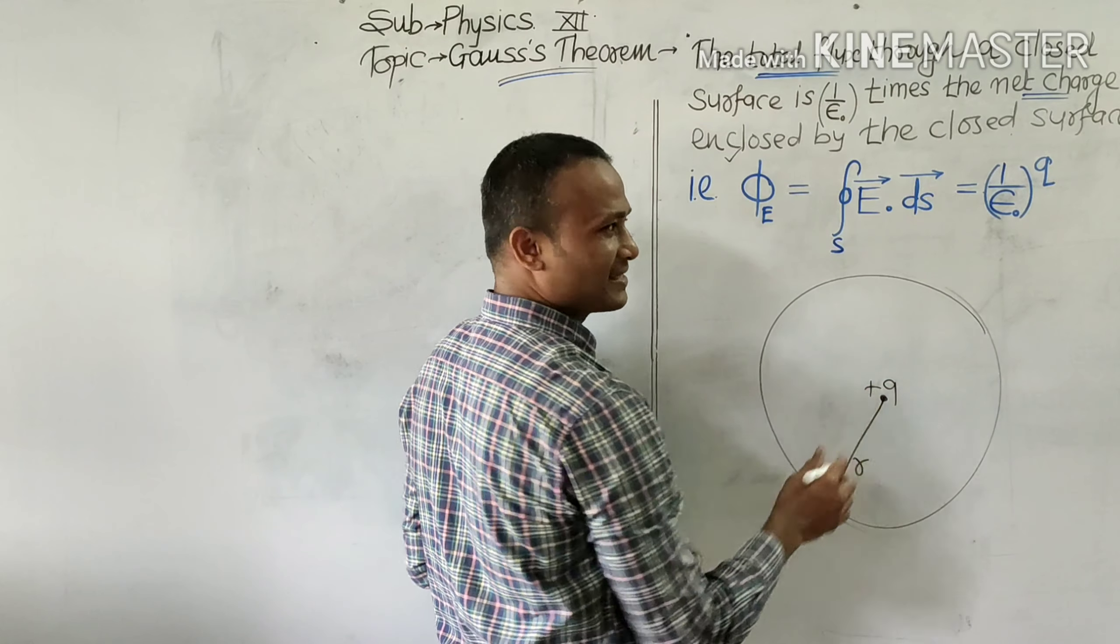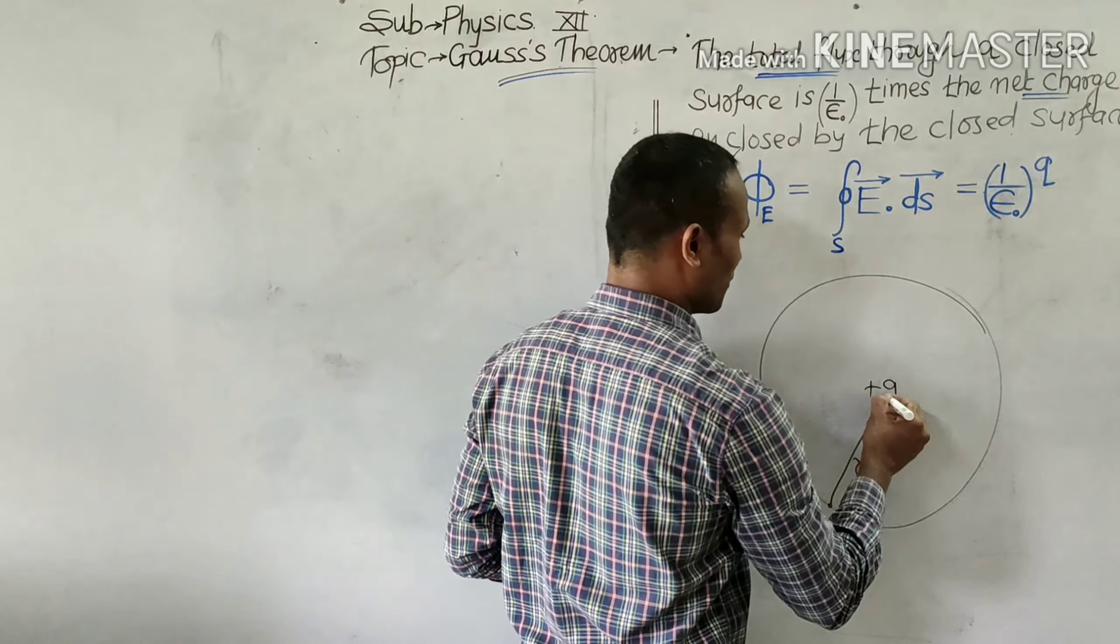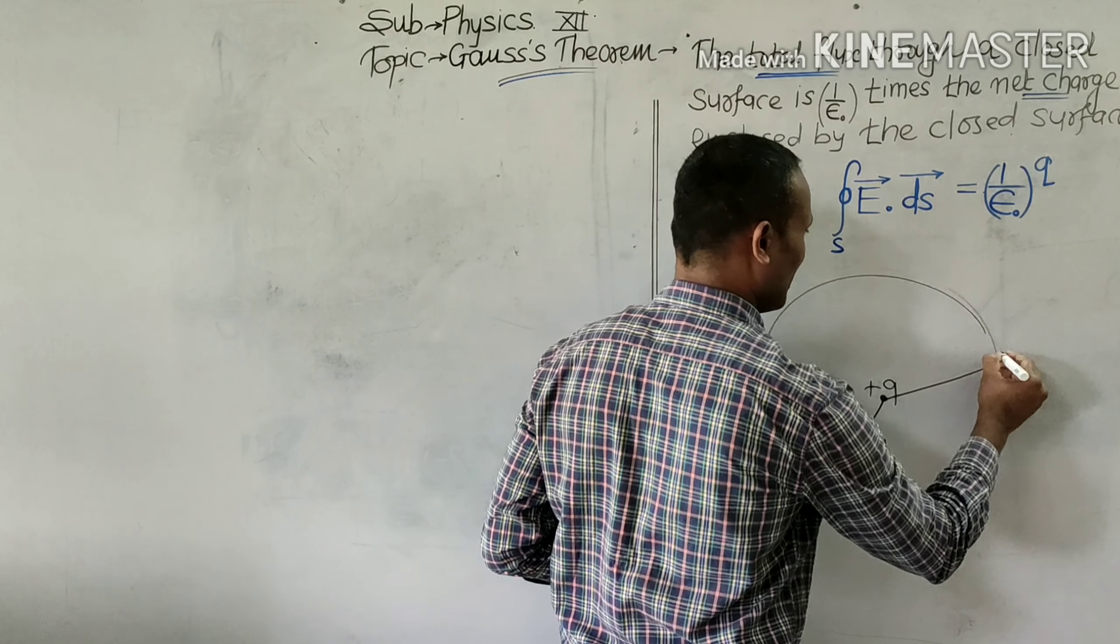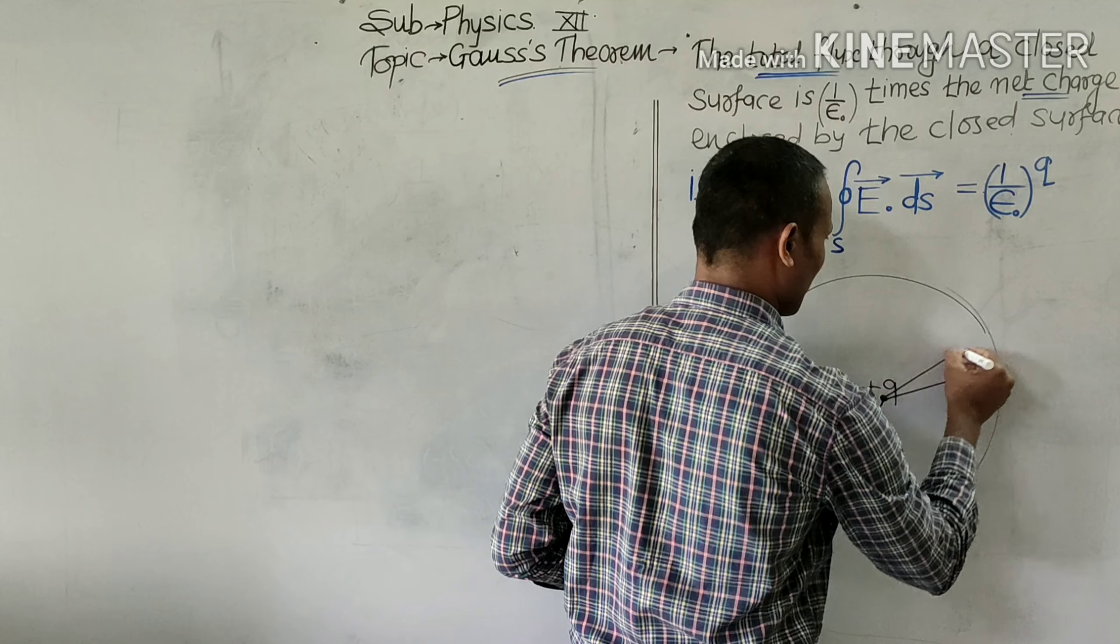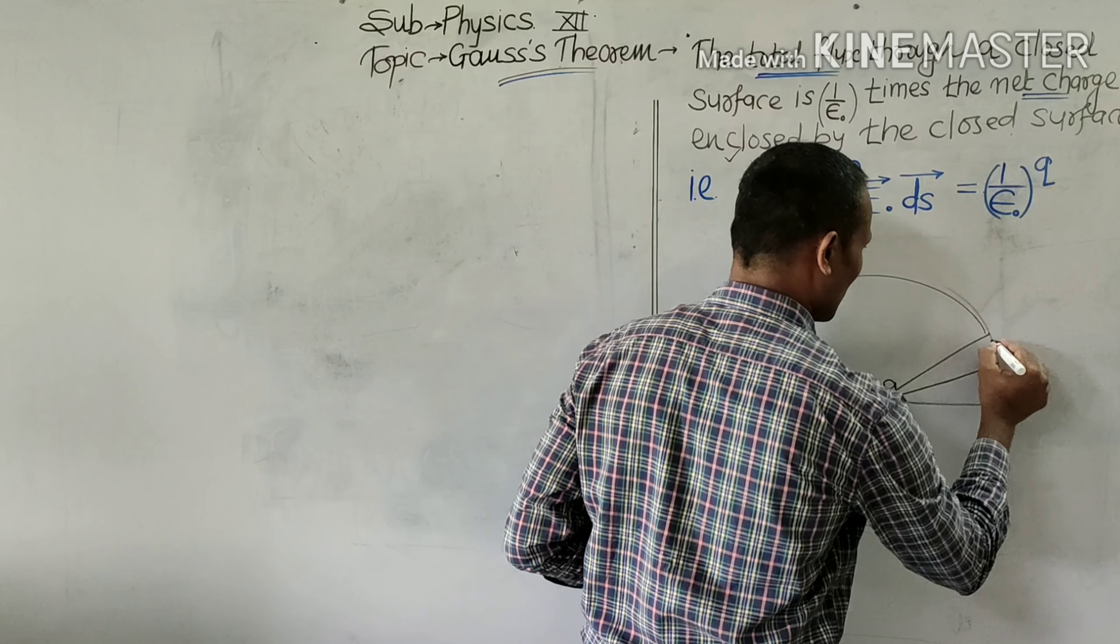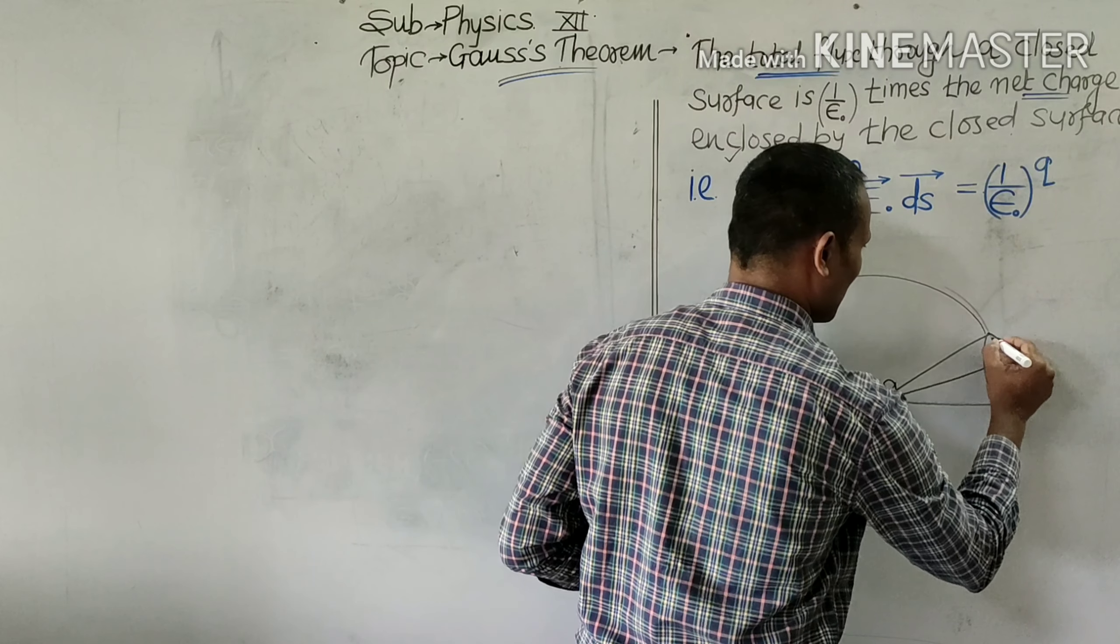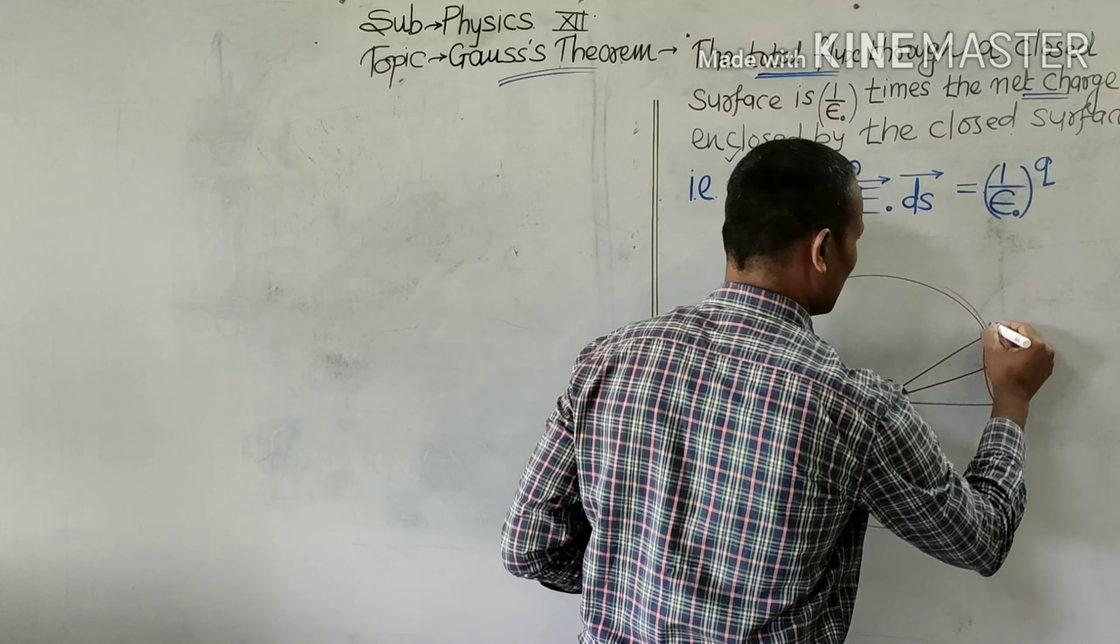Charge is placed at the center of sphere and we will consider a small surface area, say for example dS. This is small surface area dS.